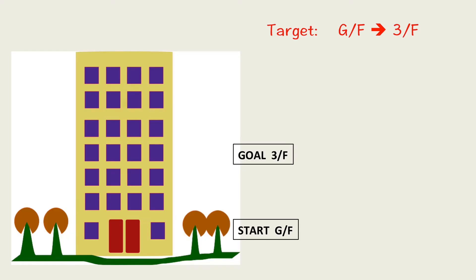Here is an example. It shows a building. We're starting at ground floor and we want to go to the third floor. We have the following choice.